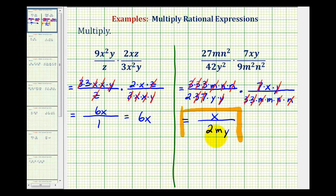I hope you found these two examples helpful. Next we'll take a look at when we have binomials and trinomials in the numerators and denominators.